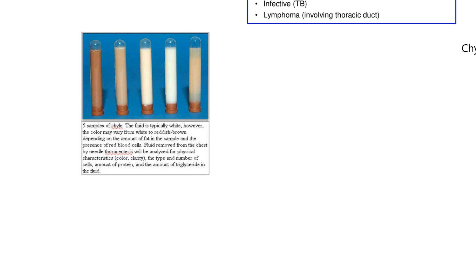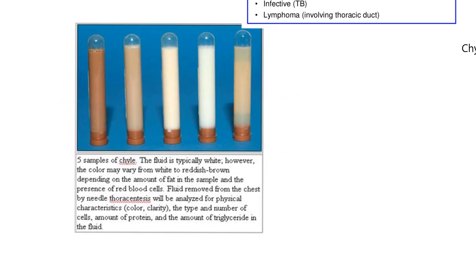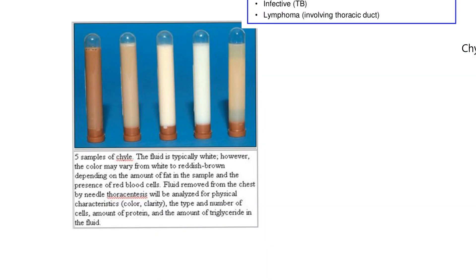The fluid is milky because it's fatty. This shows five tubes of fluid that were collected by thoracentesis. Whenever you say centesis, that means something was drawn out by a needle — thoracentesis means we punctured the thorax with a needle and syringe and drew out fluid. That's what we've got in these five tubes.